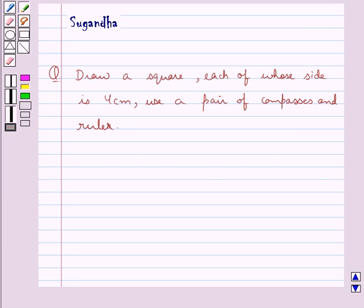Hello and welcome to the session. In this session we discuss the following question which says draw a square each of whose side is 4 cm, use a pair of compasses and ruler.